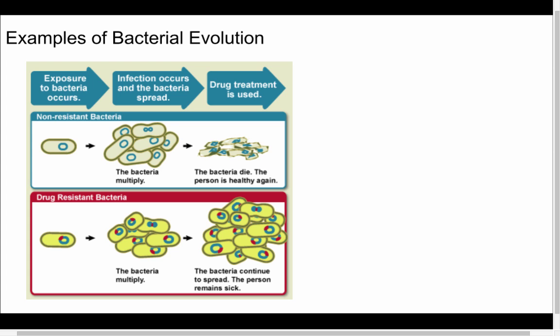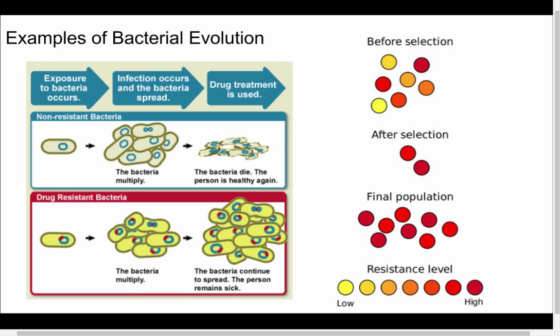When we talk about bacterial evolution, we see bacteria exposed to some sort of medication. The important thing to note is that within the bacterial population there is existing variation. When that population is exposed to a drug, the non-resistant bacteria die. But the drug-resistant members of the population survive and spread after the drug exposure. What we're seeing is natural variation combined with a selective pressure — in this case, the drug — resulting in a final population of highly resistant bacteria.